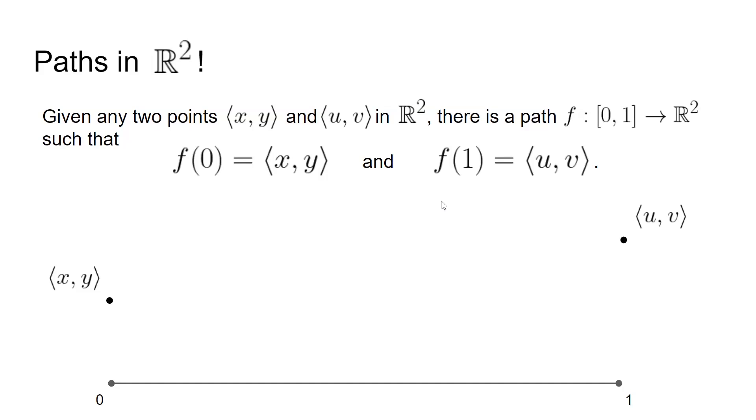It's not so hard to find this path, actually, it's really just the straight line between the two points. But anyways, this ability to find a path between any two points, this is called path connectedness.